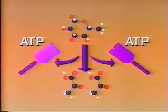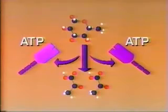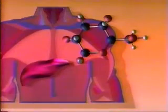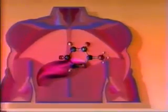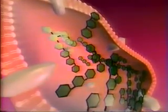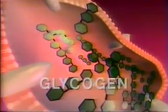But before the process of glycolysis gets underway, glucose must be made available. In the human body, glucose is stored principally in the liver and muscles as the carbohydrate glycogen. So glycogen acts as the storehouse of glucose in the body.